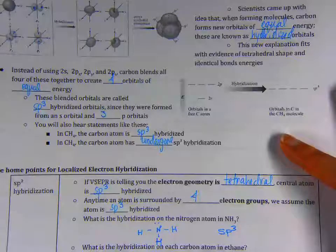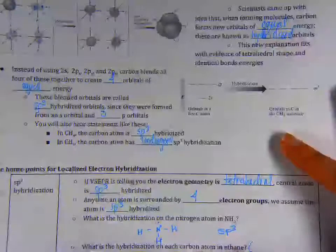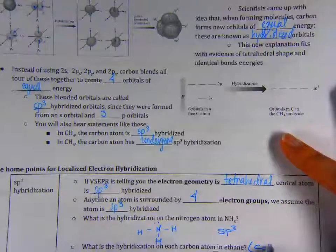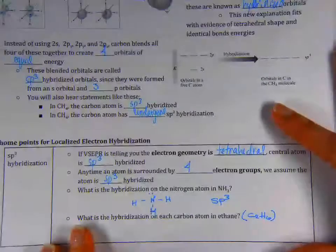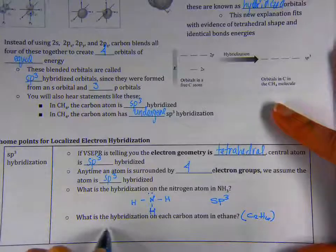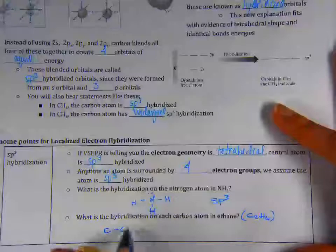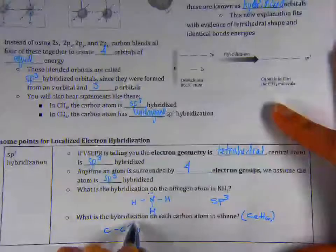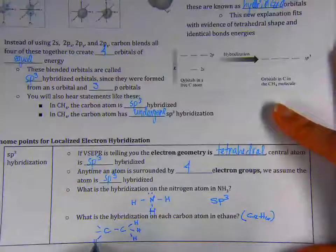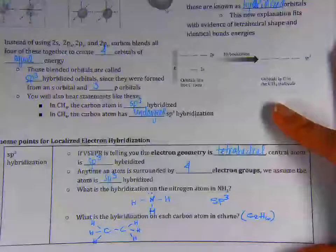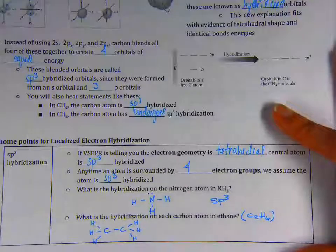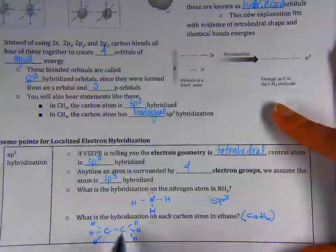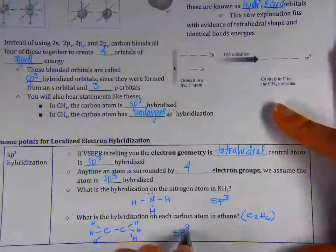And then the hybridization on each carbon atom in ethane, that is going to be C2H6. So attempt drawing that Lewis structure on your own. If you want to pause the video, you may certainly do so. I'm going to keep writing up here. However, ethane is going to look like this. If we're looking at each carbon separately, there's one, two, three, four bonds, or four electron groups around each carbon. So each of these carbons is going to be sp3 hybridized. And that's pretty much it.